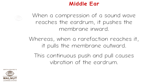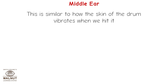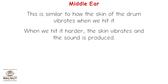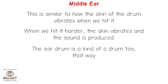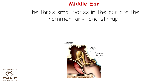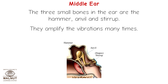This continuous push and pull causes vibration of the eardrum. This is similar to how the skin of a drum vibrates when we hit it — the eardrum is a kind of drum too. The three small bones in the ear are the hammer, anvil, and stirrup. They amplify the vibrations many times.